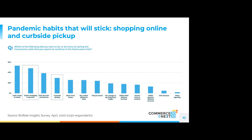Some of these habits are things like shopping online more in general, or curbside pickup. These are really significant for our community because curbside pickup is not an easy thing to do or to scale. As we're going to be talking more with the panelists, this is one of those areas of digital acceleration that is putting a lot of pressure on retailers. Consumers indicated they'll continue to work from home or do things like buy online and pick up in store.